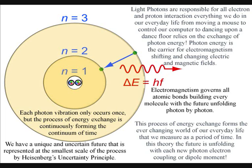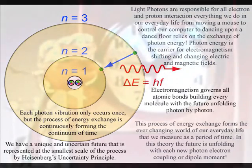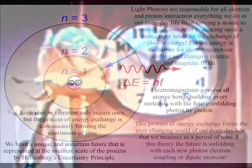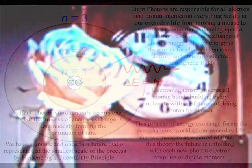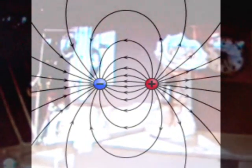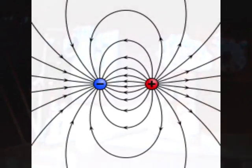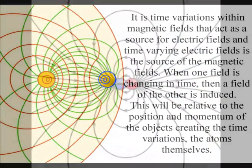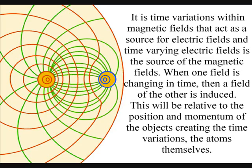Each photon-electron coupling or dipole moment only occurs once, but the process of energy exchange is continuously forming the continuum of time. This process forms a movement of positive and negative charge with the continuous flow of electromagnetic fields in three-dimensional space.